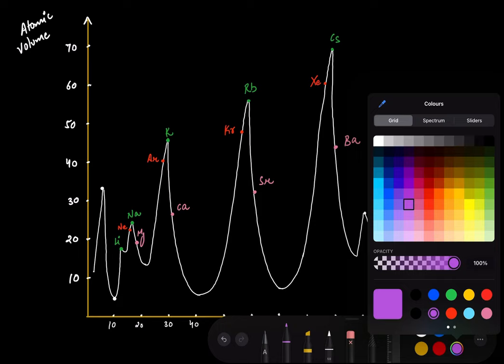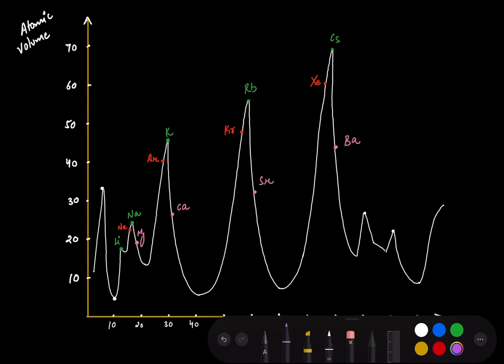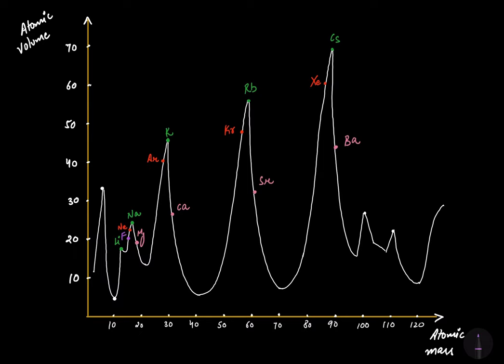Fluorine comes before neon, chlorine comes before argon, bromine comes before krypton, and iodine comes before xenon — all on the ascending portions of the curve. So the halogens are positioned just below the noble gases on each ascending segment.